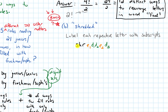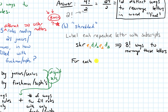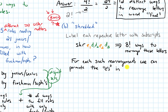Overall, we have eight letters, so initially there are 8 factorial ways to rearrange these letters — but this is going to overcount. For each rearrangement of these letters, we can permute the E's. There are two E's, so we can permute them in 2 factorial, which is 2 ways. For the arrangement that is just the word 'shredded,' there are 2 factorial ways to permute the E's: either keep them in the same order or swap them.